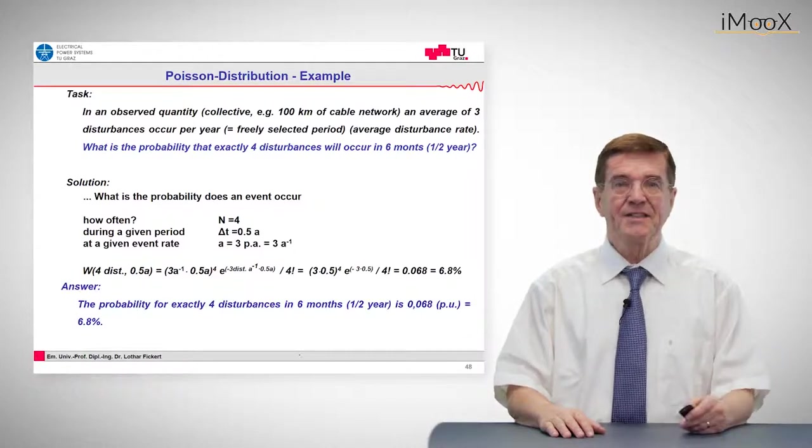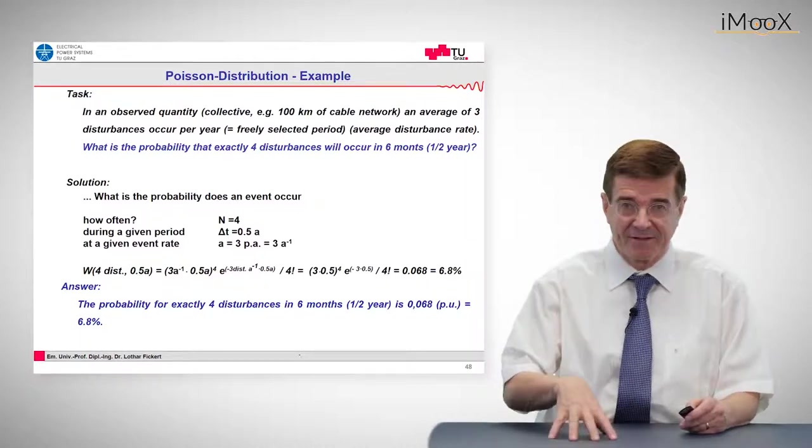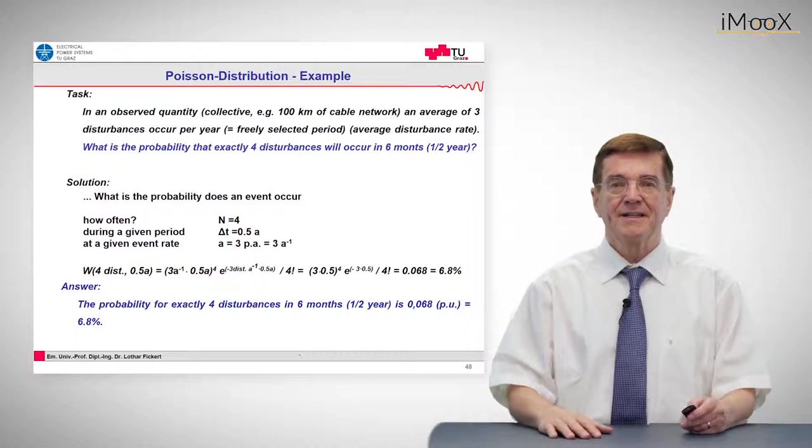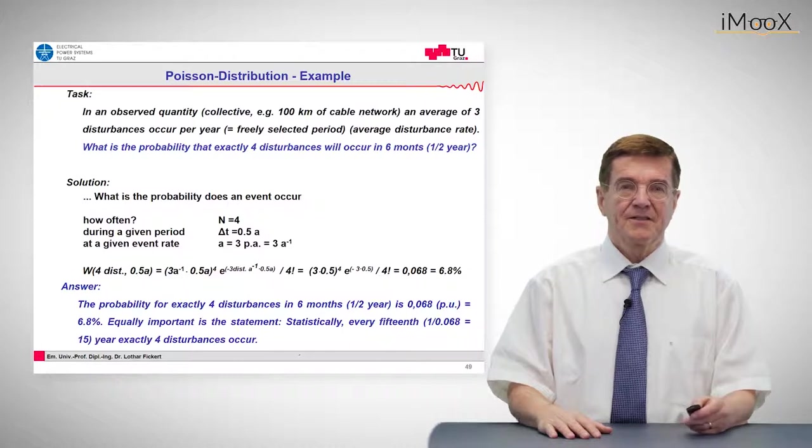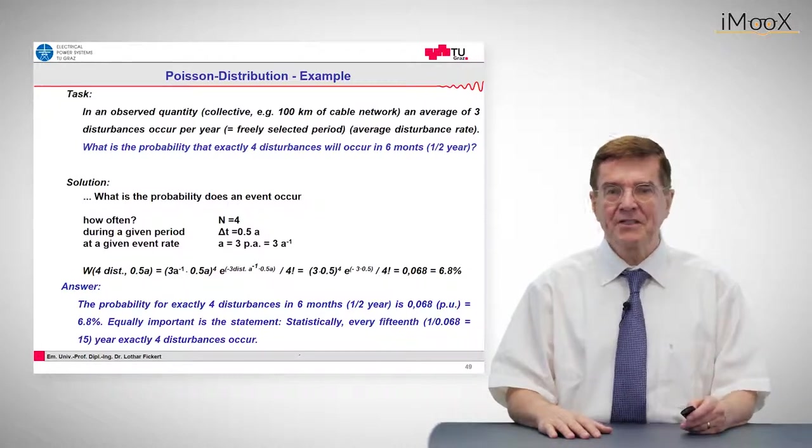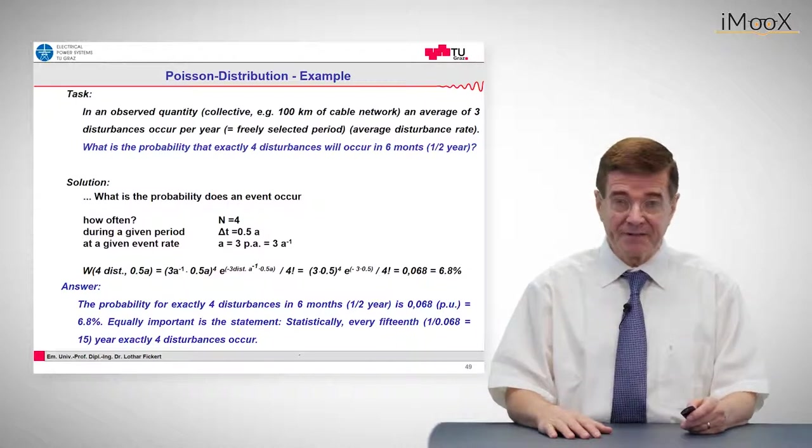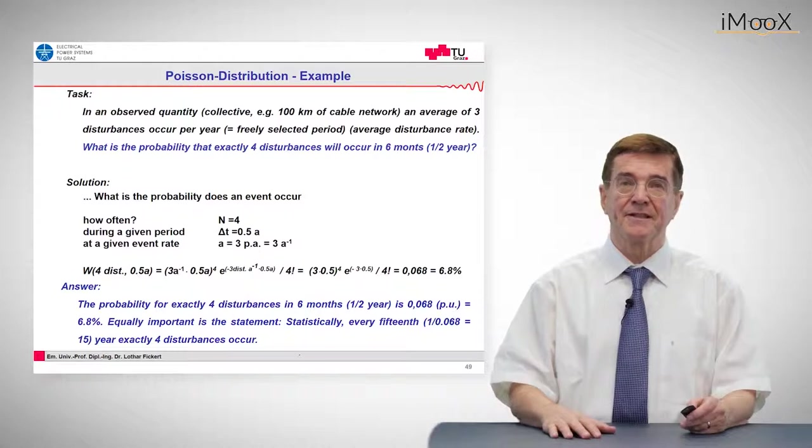The answer to the question is: the probability of exactly four disturbances in six months, which is half a year, is 6.8 percent. Also it can be said that on average every 15th year such an event will occur in this half year.